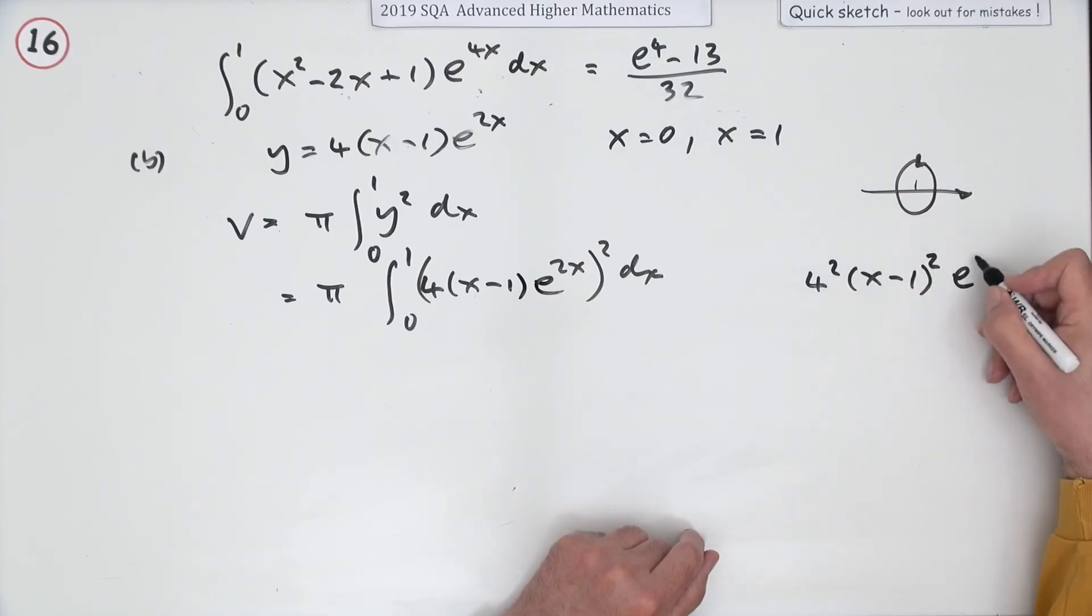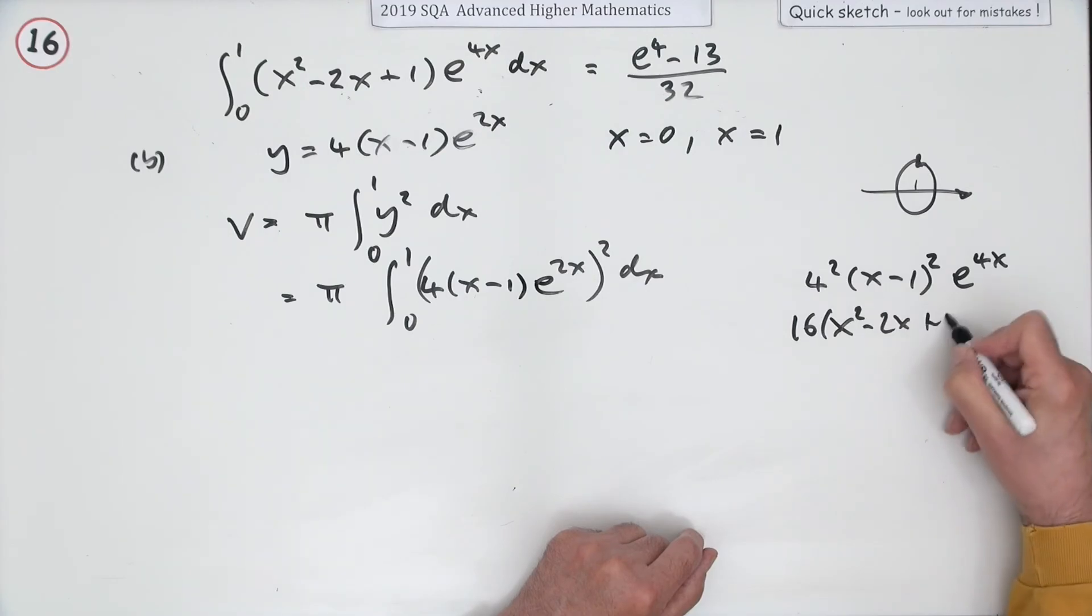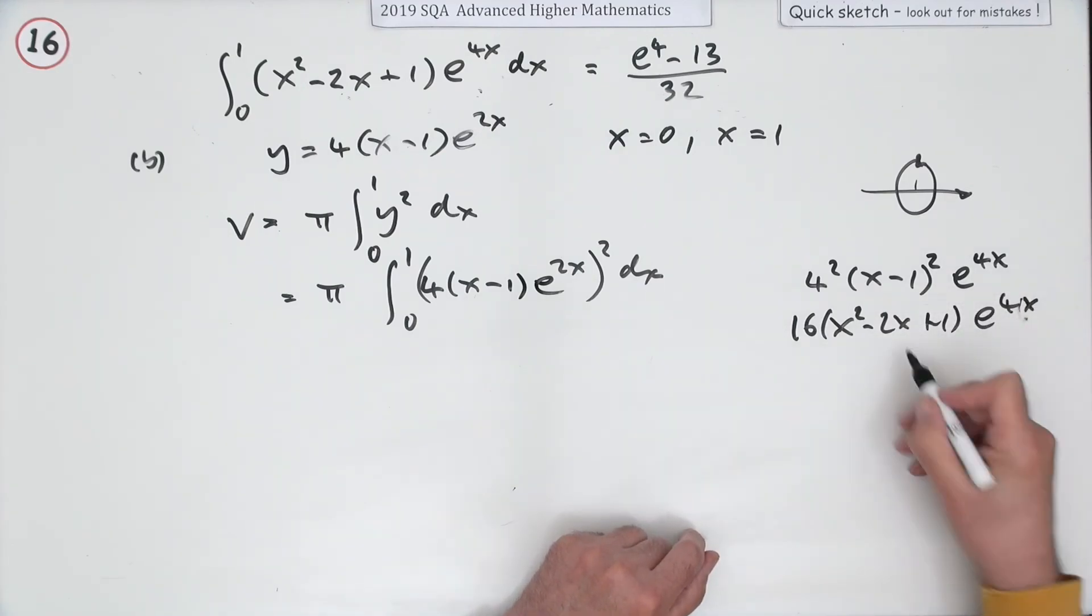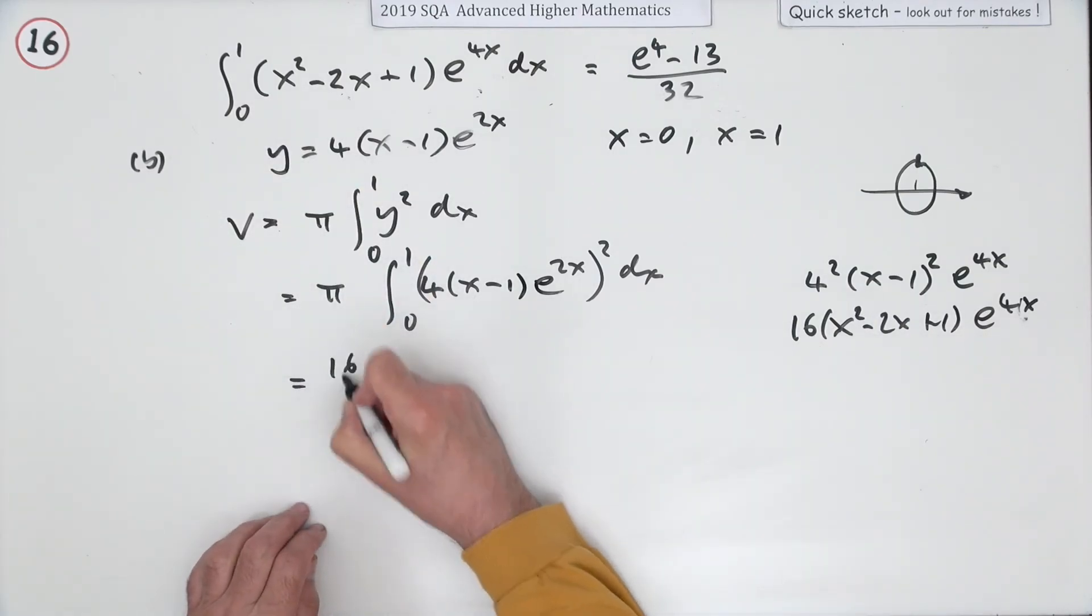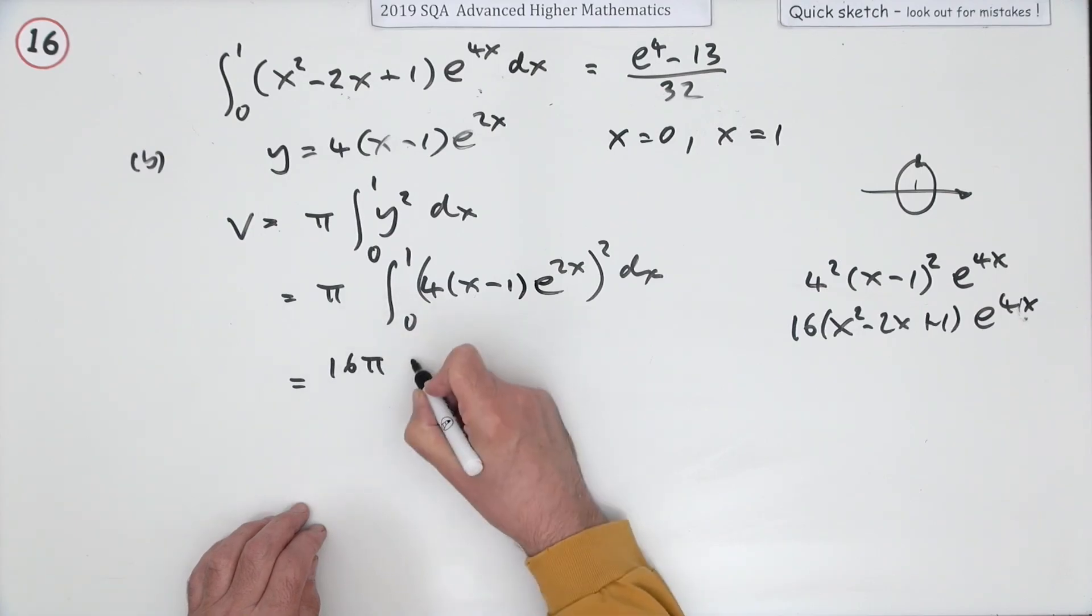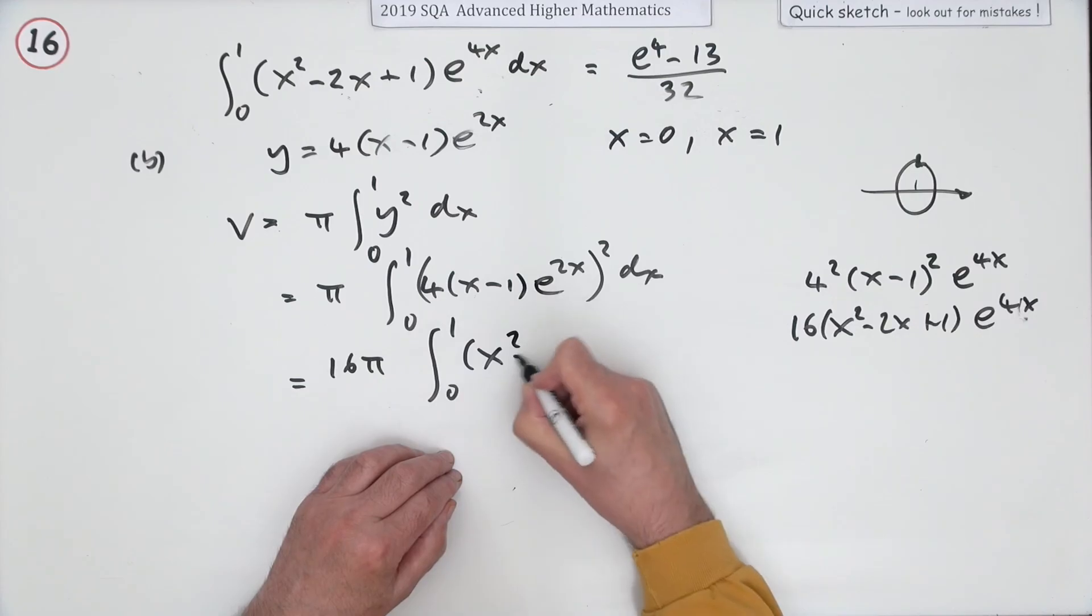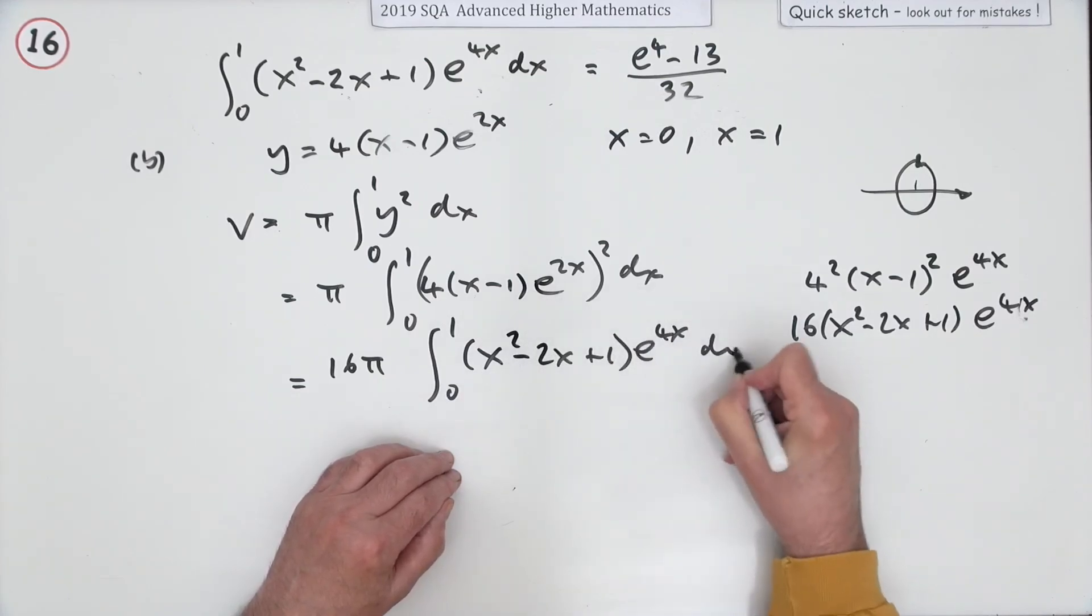I'll just do it over here now. So you've got 4 squared x minus 1 squared e to the 4x. So that's 16 times x squared minus 2x plus 1 e to the 4x, not very good looking x there. Which is more or less this apart from the extra 16. So I'll take that 16 out of it and make that 16 pi times the integral from 0 to 1 of x squared minus 2x plus 1 e to the 4x dx.